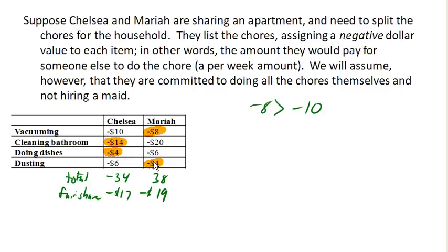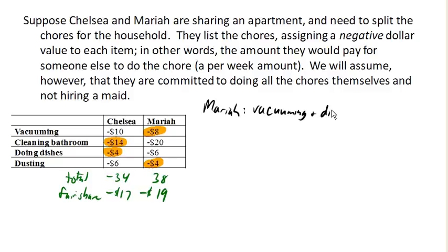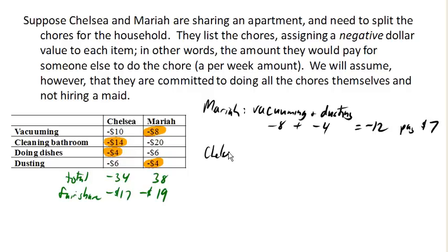In our initial allocation, Mariah is going to do the vacuuming and the dusting, which have a combined value of negative 20 — wait, negative 12. Now notice that this is not as much as her fair share of negative 19, so she's gotta make up the difference. To get down to negative 19, she's gonna have to pay the other 7 dollars. Chelsea is going to do the bathroom and the dishes, which have a combined negative value of negative 18.